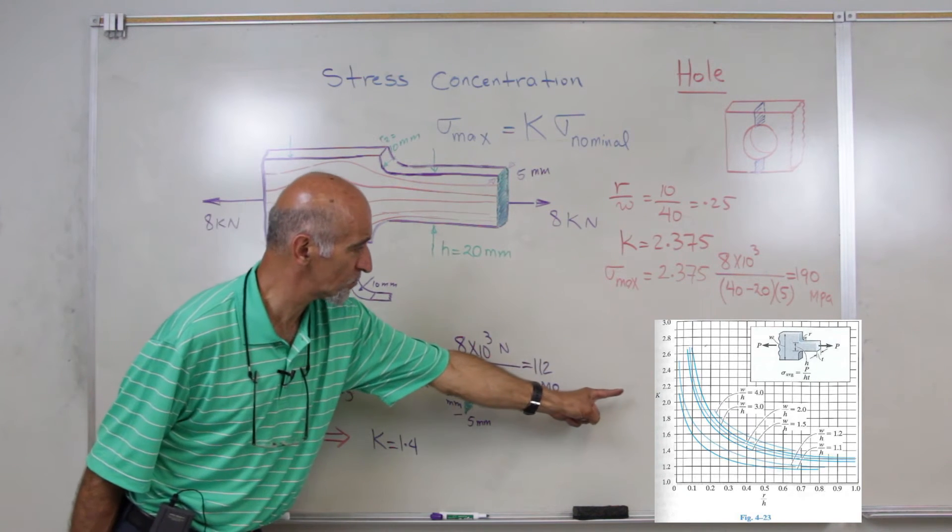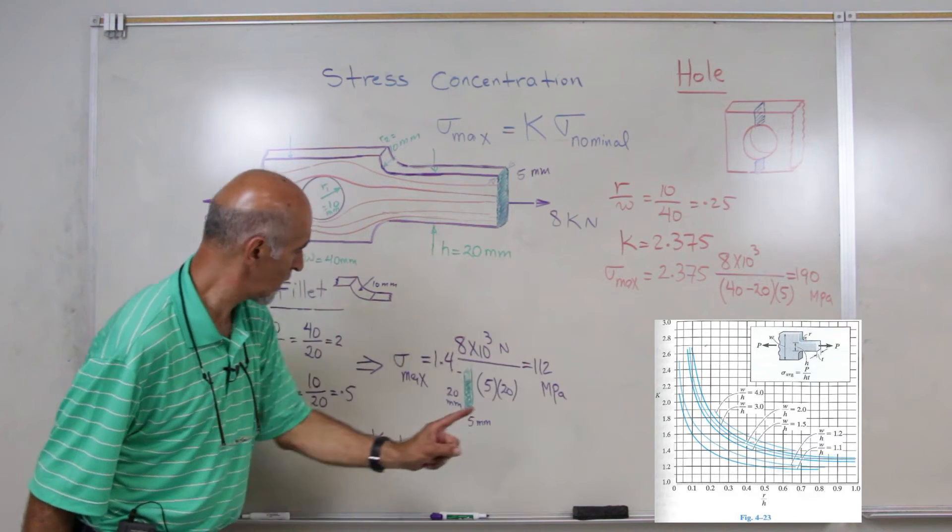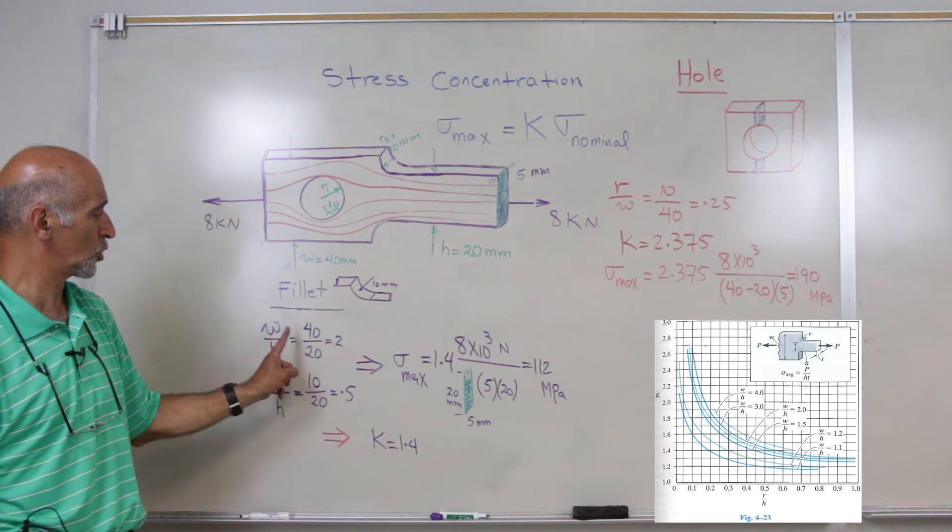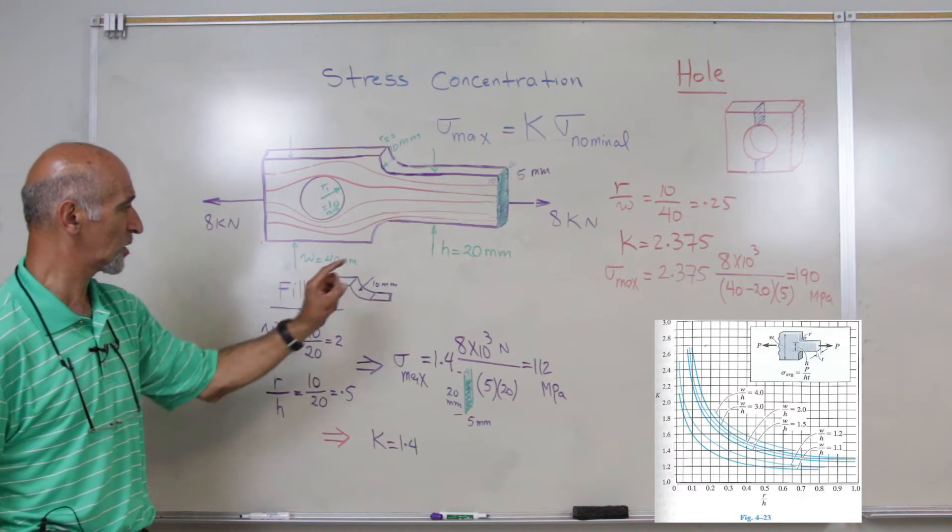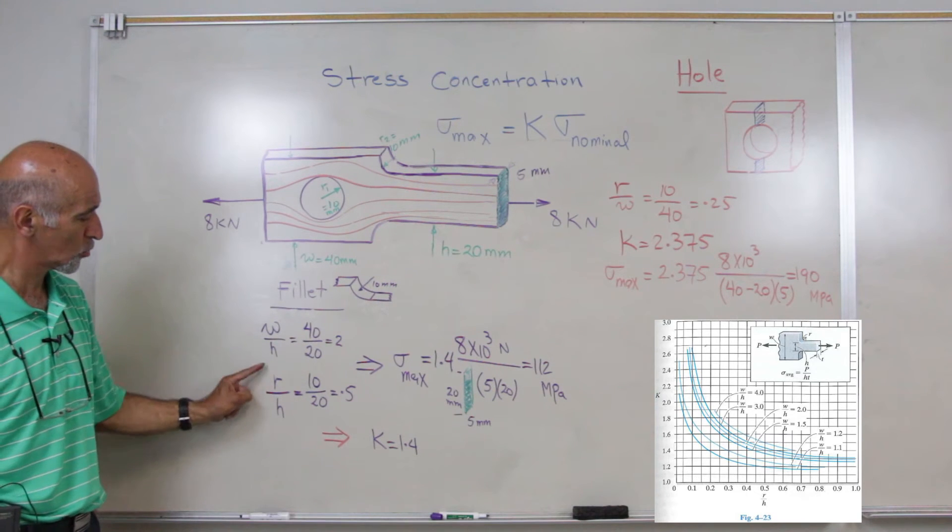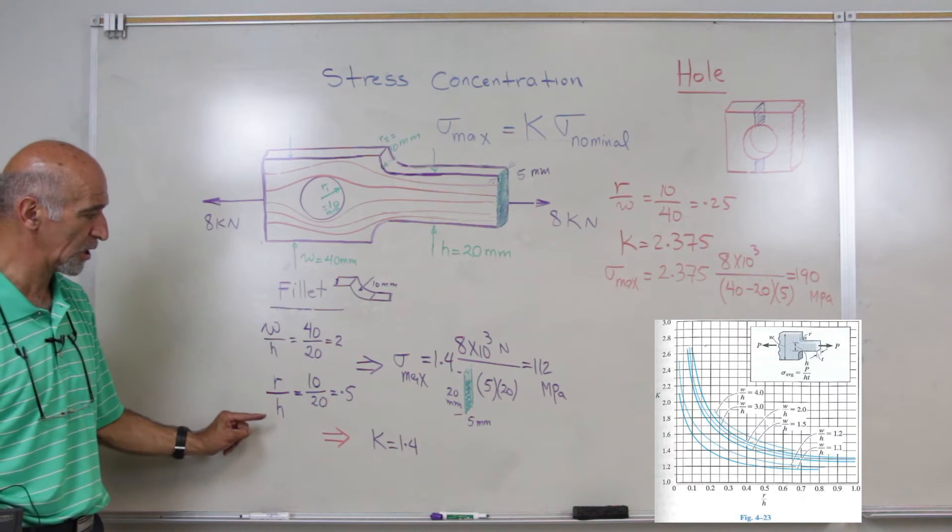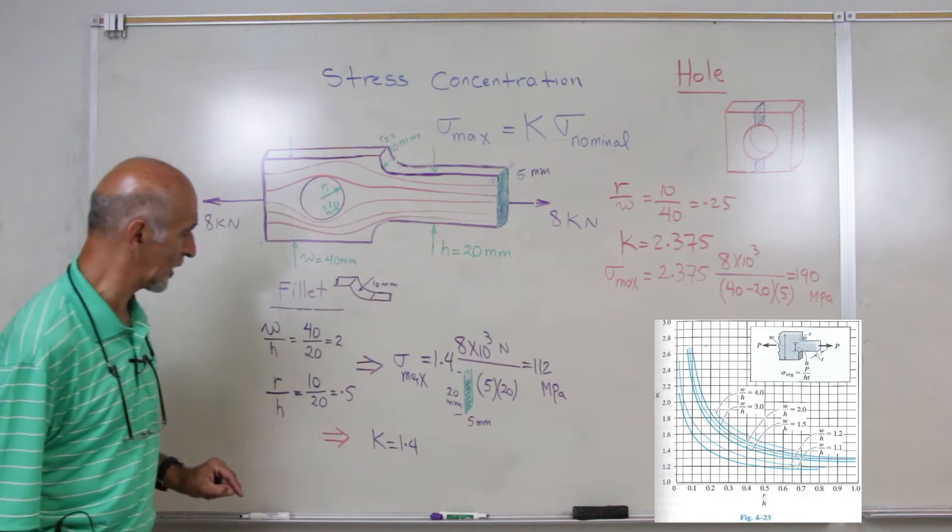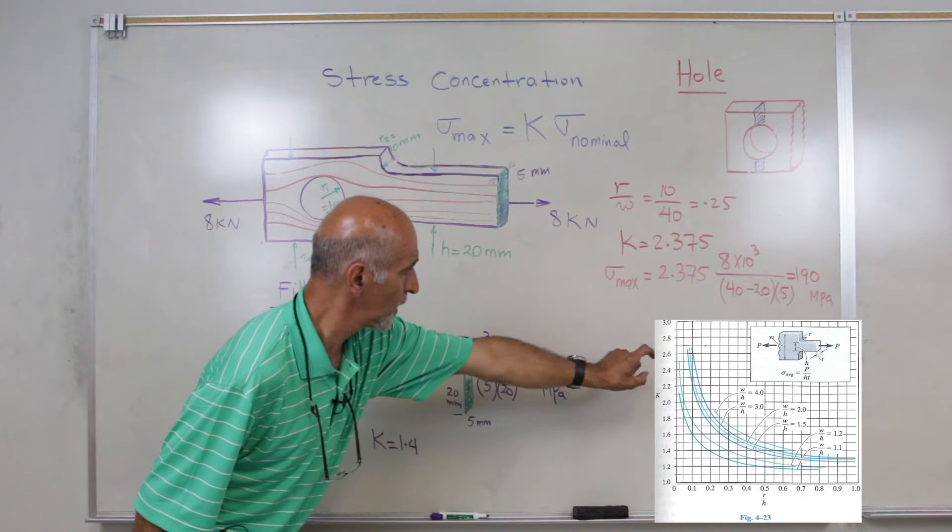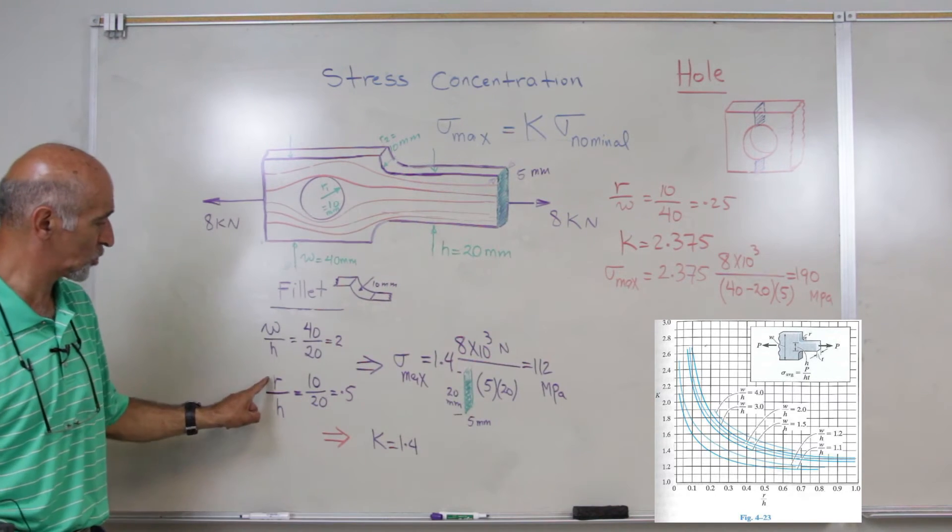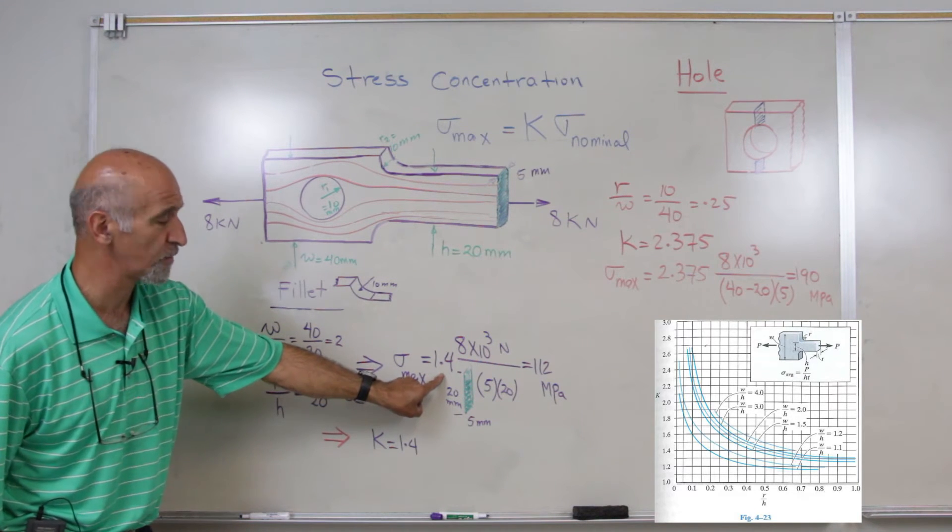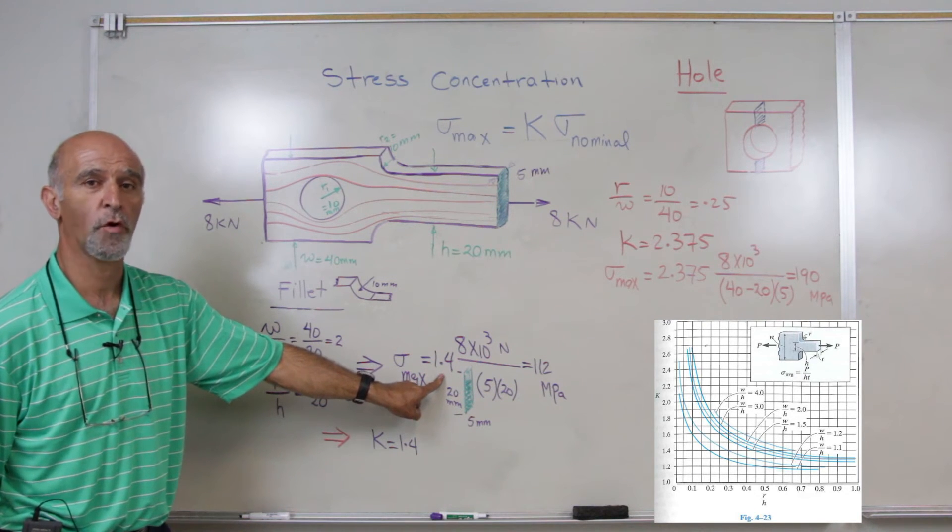where the horizontal axis represents W over H, and the different curves correspond to R over H values. If you cross these two values, if you go up and hit the right curve which represents R over H, we will find our stress concentration factor to be 1.4.